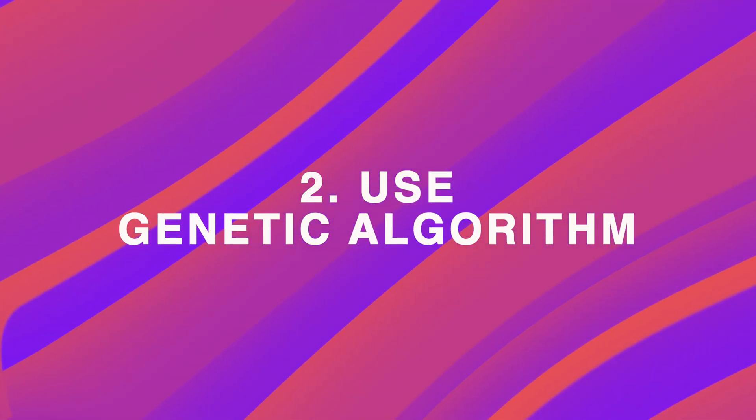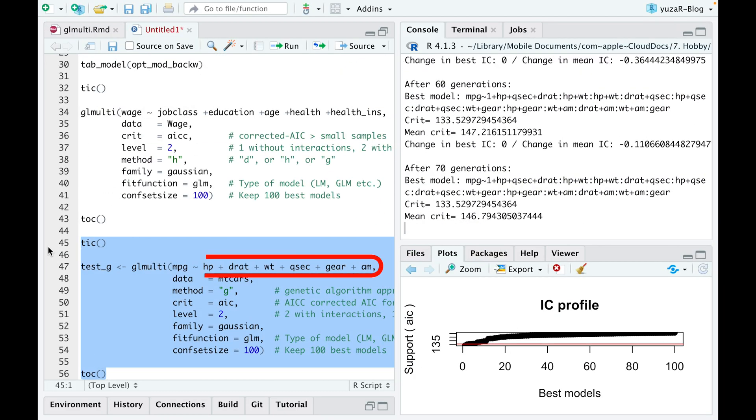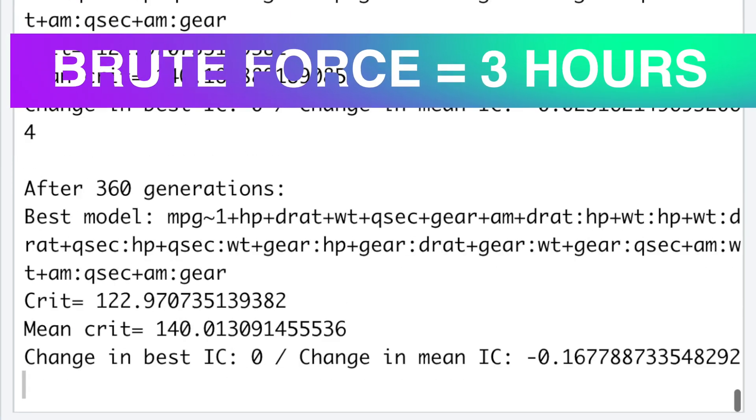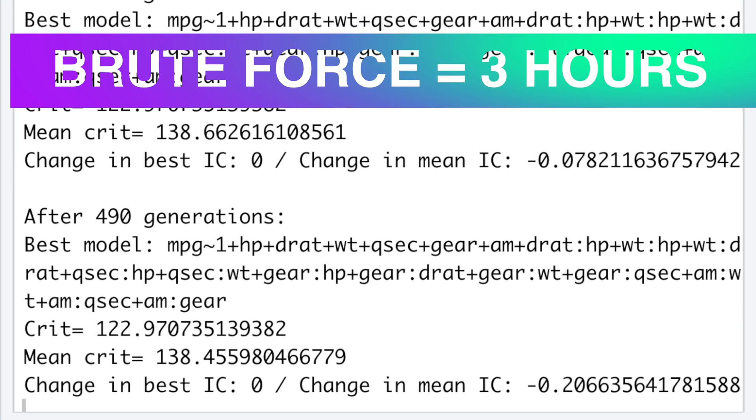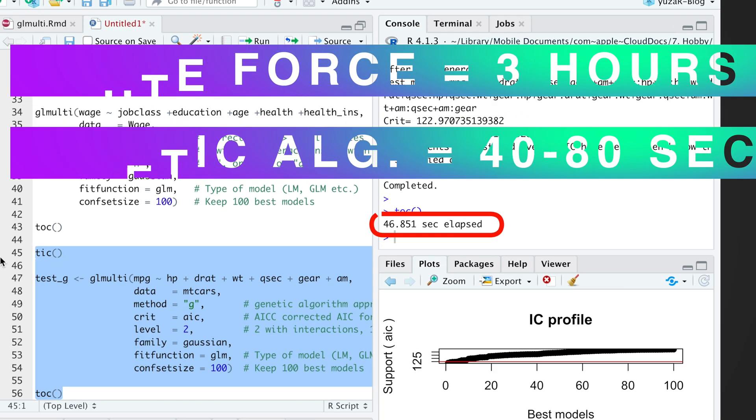Particularly, having six numeric predictors with interactions, the brute force approach needs almost three hours. While genetic algorithm runs only 40 to 80 seconds and produces almost identical results.